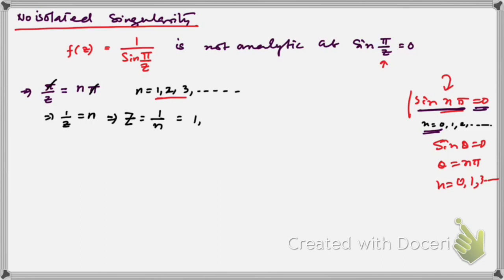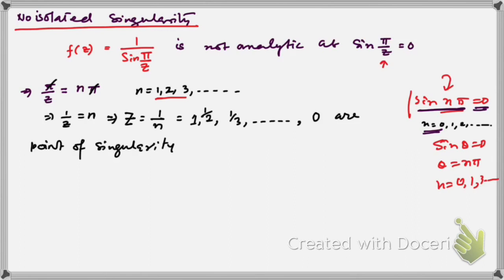Substituting values: when n = 1, z = 1; when n = 2, z = 1/2; when n = 3, z = 1/3; and so on. As n approaches infinity, z approaches 0. So all these points — 1, 1/2, 1/3, ... — are singularities because f(z) is not analytic when sin(π/z) = 0 at all these points.